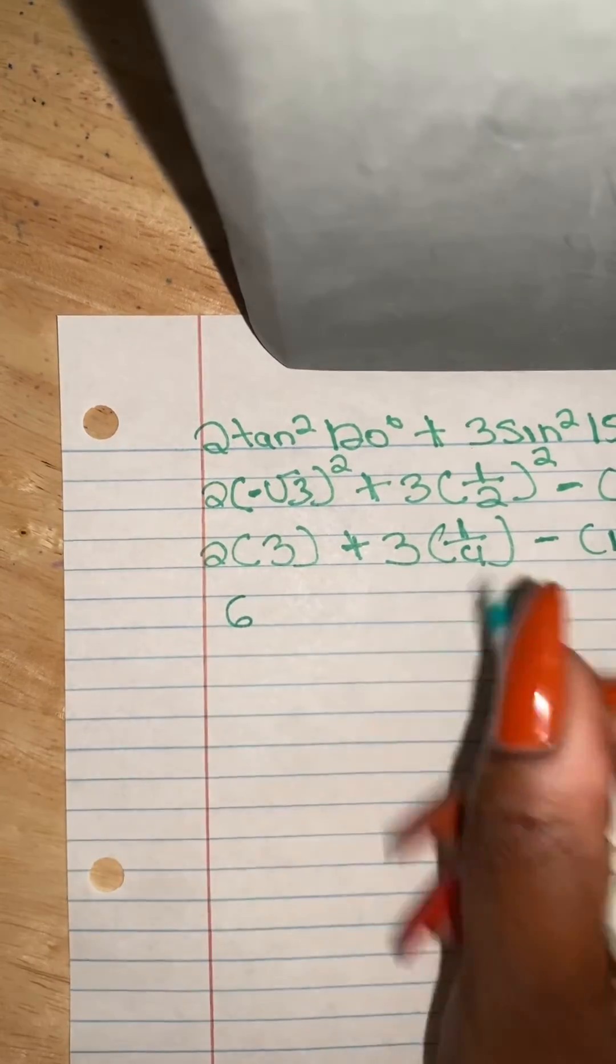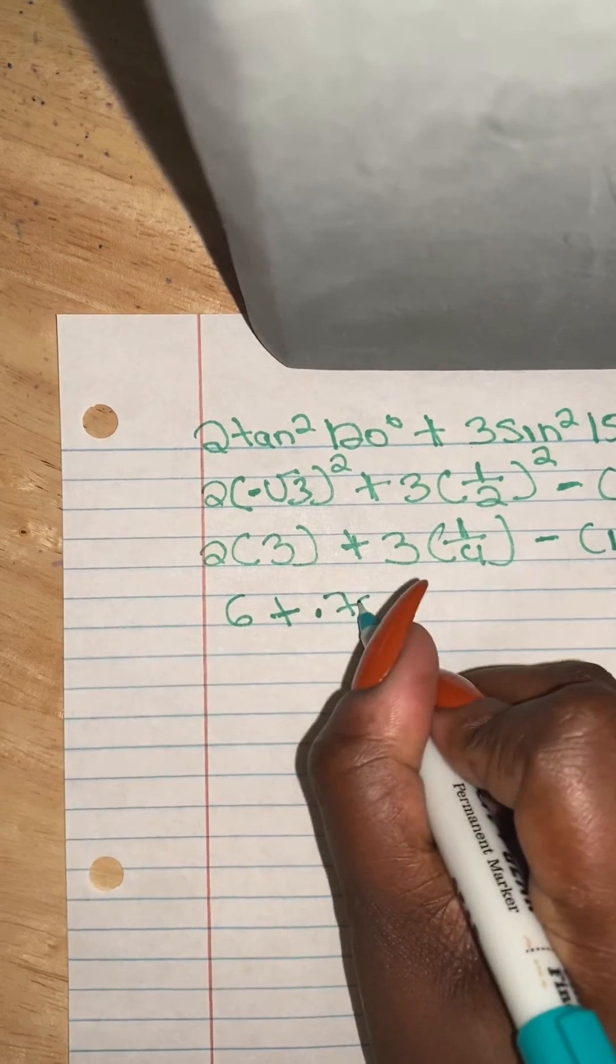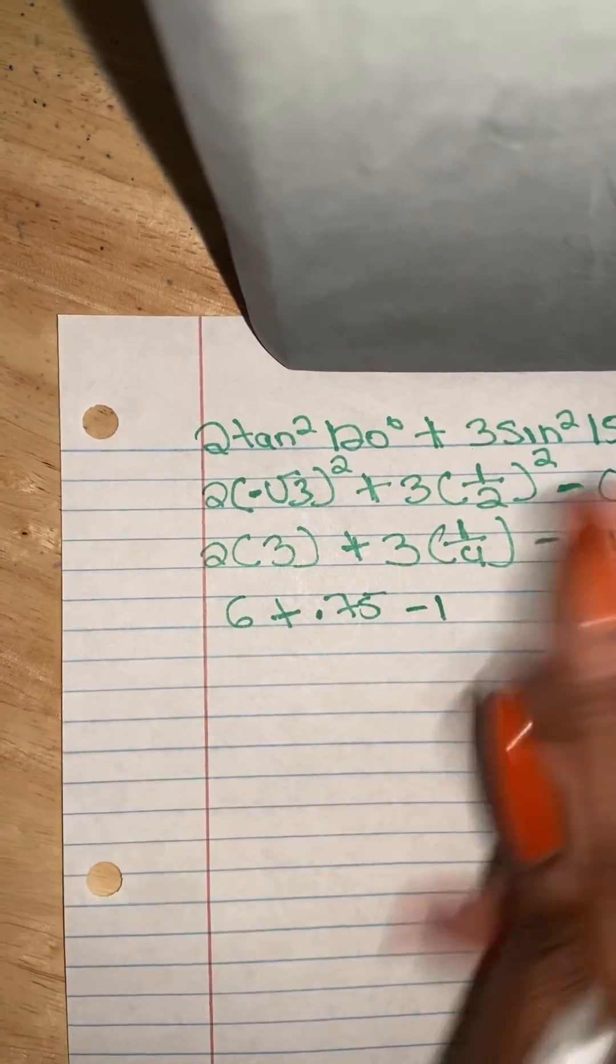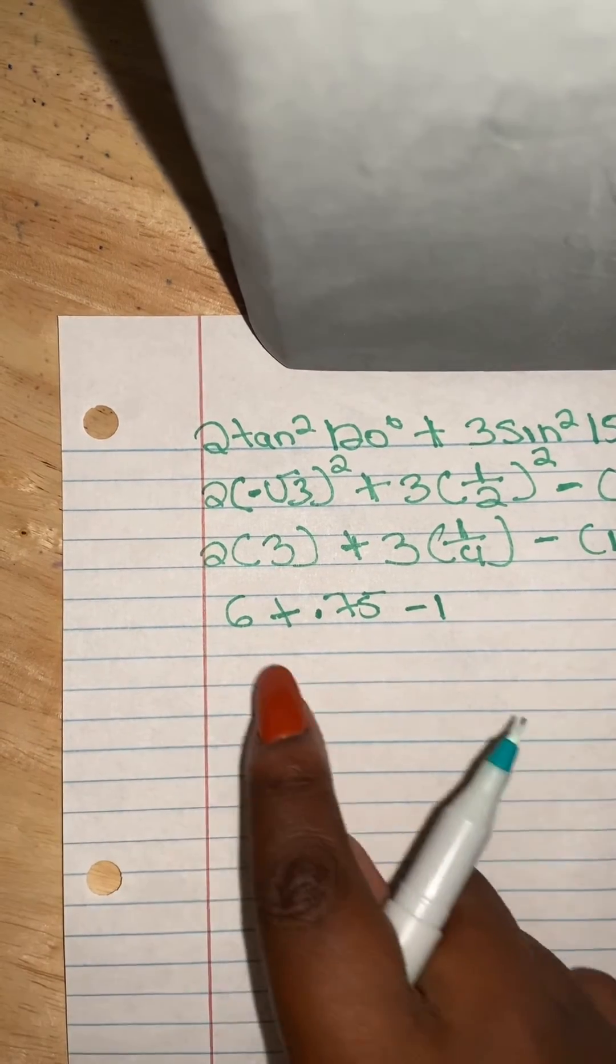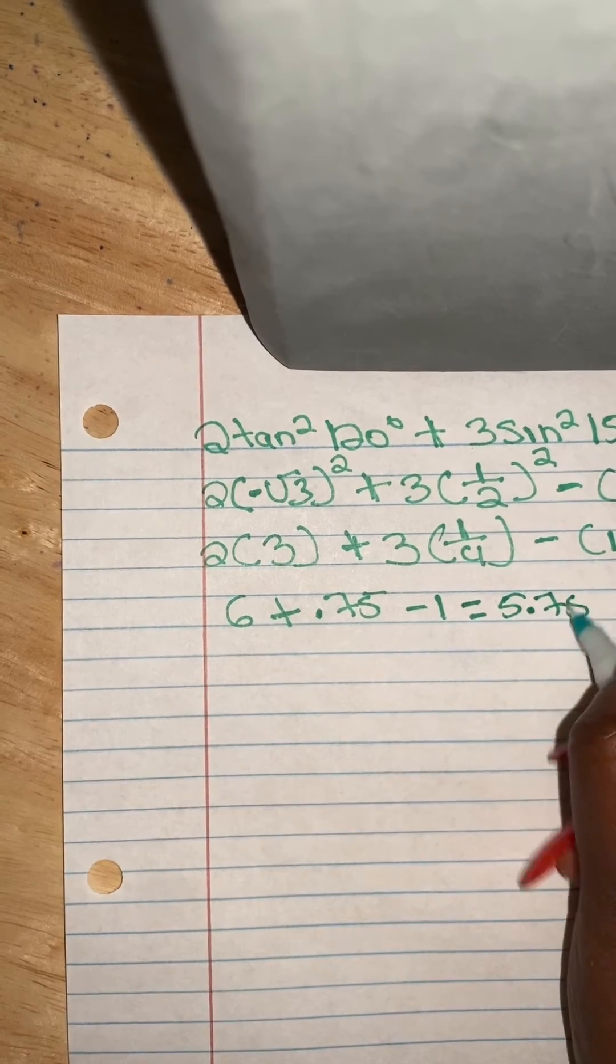Alright, so this is going to be 6. This is going to be 0.75. And then this is going to be minus 1. So when we do all that, this is 6.75 and this is 5.75.